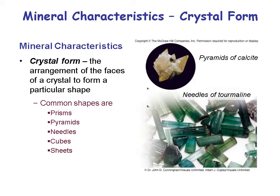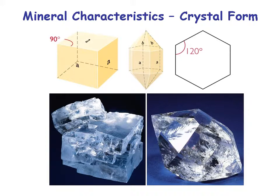Minerals have a crystal form. Common shapes include prisms, pyramids, needles, cubes, and sheets — that's why we buy cut stones for rings. Looking at rock salt on the left and quartz on the right: rock salt has a crystal habit of 90-degree angles, and quartz has a hexagonal crystal habit with 120 degrees between the sides.